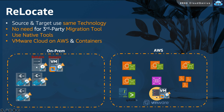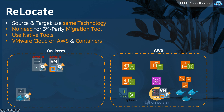The second usage of the relocate strategy is when you have on-premises containerized, dockerized applications that you want to move to the cloud. You can simply push your Docker container to a repository and then pull it back on the AWS target.